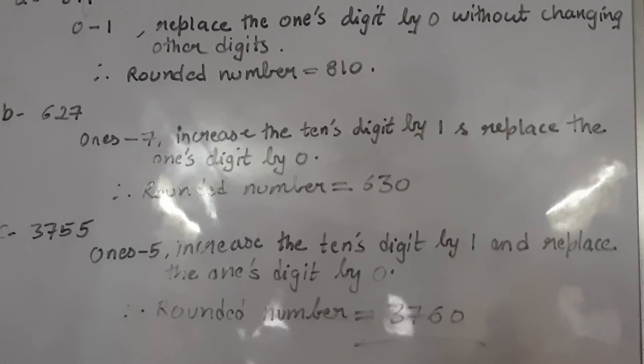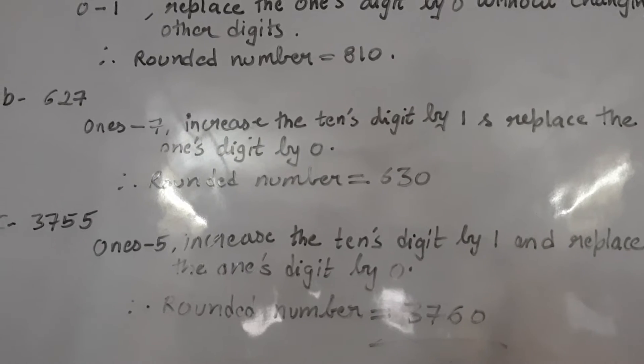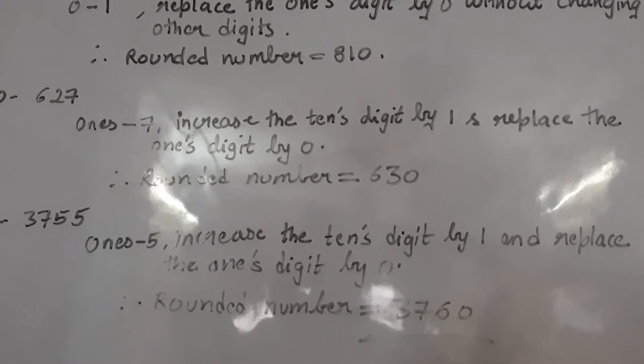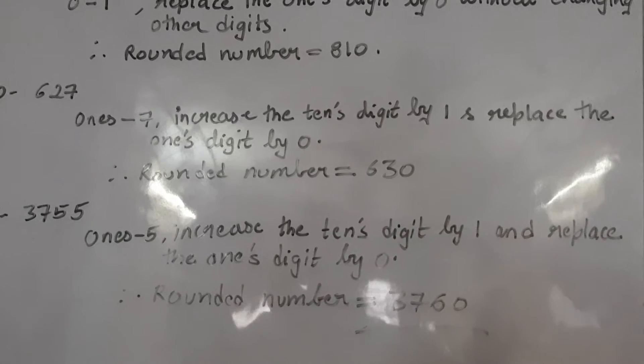It means 2 plus 1 comes out 3. And you will remove 7. And in place of 7, means in place of 1's position, you will write down the 0.